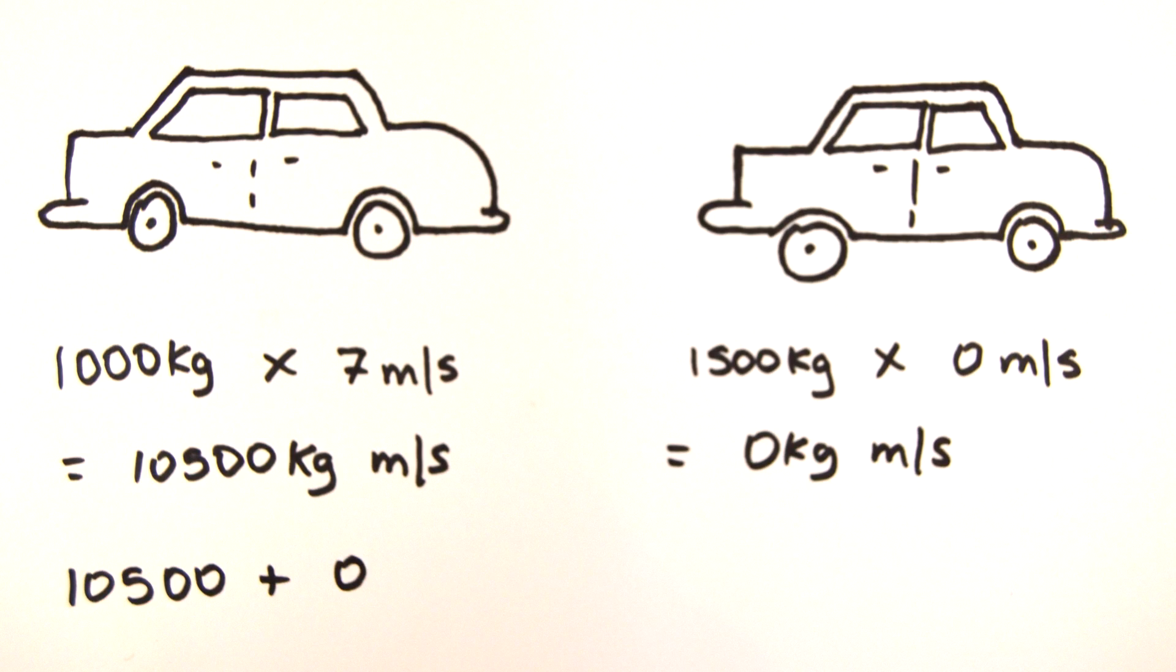Then we add them together, but because velocity has direction, so does momentum, and so we have to make one of these values negative to show it's moving in the opposite direction. In this case it doesn't matter because it's zero.